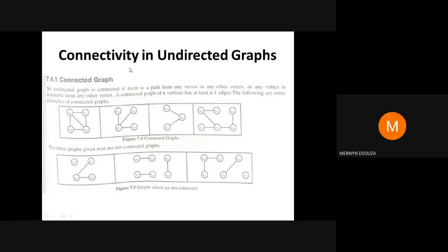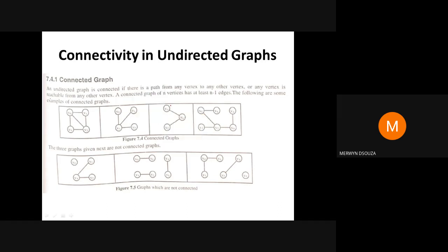We are talking about connectivity first with respect to undirected graphs. What is a connected graph? A connected graph is one where any vertex is reachable from any other vertex.